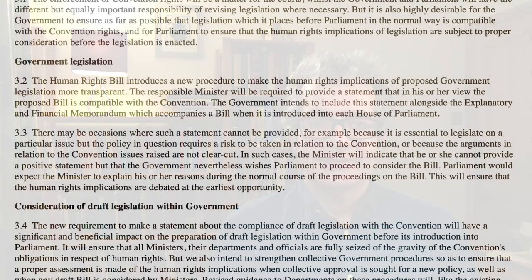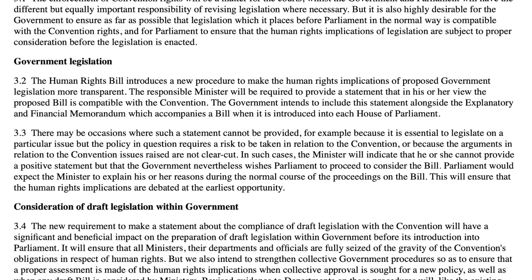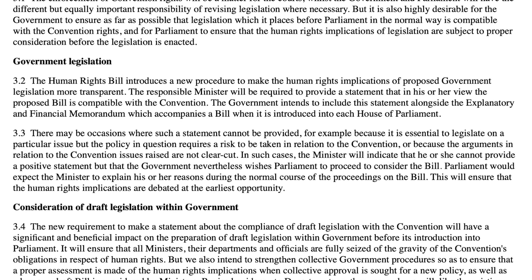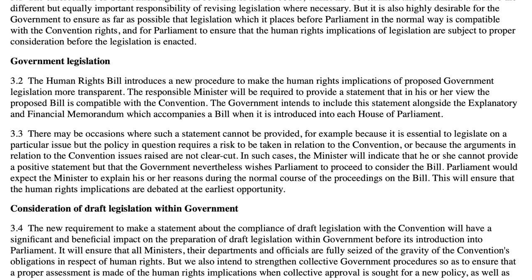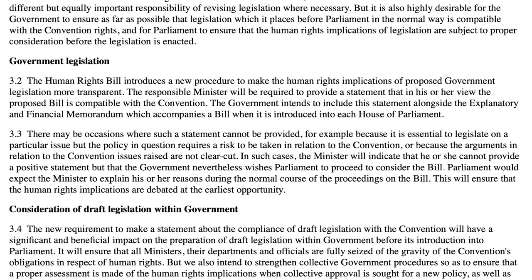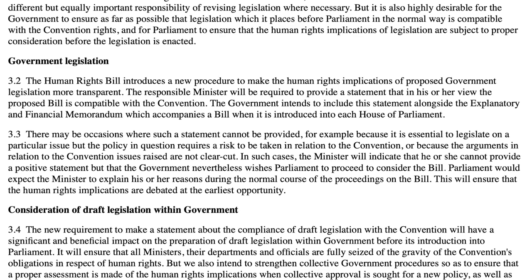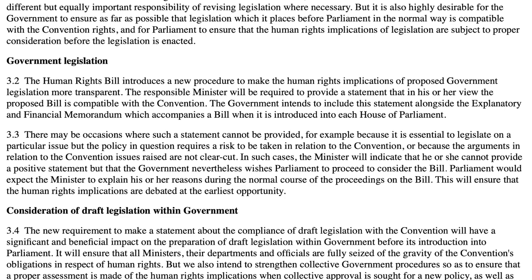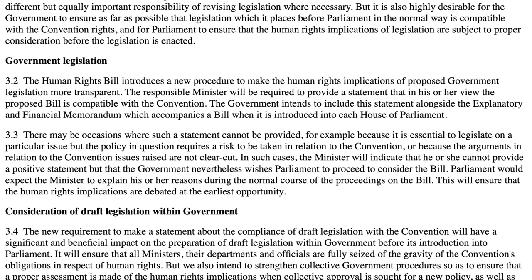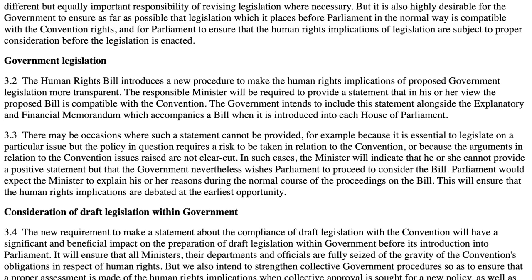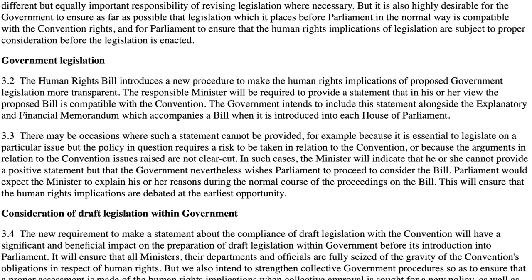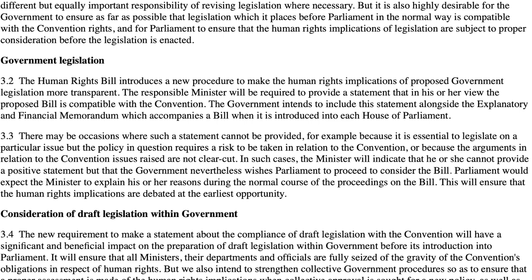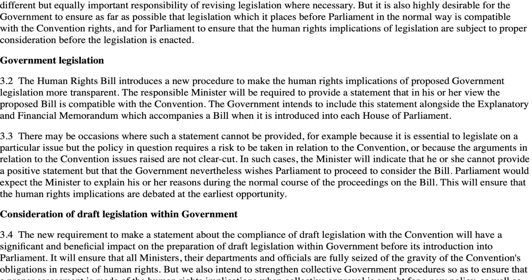As the White Paper put it, there may be occasions where such a statement cannot be provided — for example, because it is essential to legislate on a particular issue, but the policy in question requires a risk to be taken in relation to the convention, or because the arguments in relation to the convention issues raised are not clear-cut. In such cases, the Minister will indicate that he or she cannot provide a positive statement, but that the government nevertheless wishes parliament to proceed to consider the bill. Parliament would expect the Minister to explain his or her reasons during the normal course of the proceedings on the bill. This will ensure that the human rights implications are debated at the earliest opportunity.